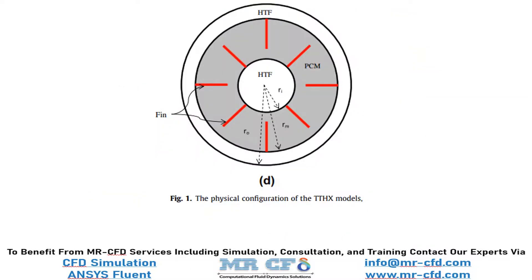In this slide, you can see figure 1 of the paper, which is the model of the triplex tube used in the paper's CFD simulation. The pipe has 4 rows of outer fins connected to the inner diameter wall and 4 rows of inner fins connected to the outer diameter wall. The material of these inner and outer walls, as well as their fins, is copper. Inside the tube, the phase change material is RT-82.